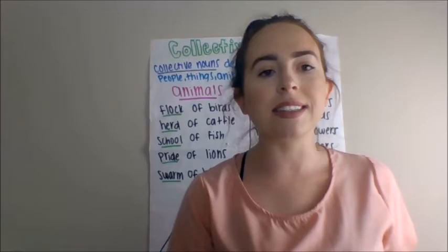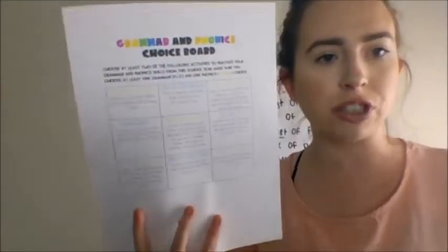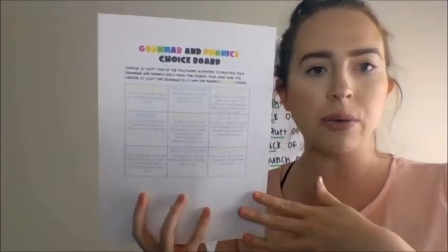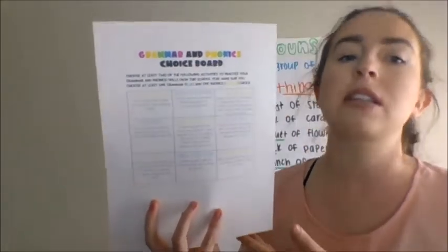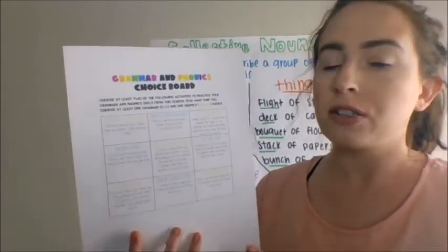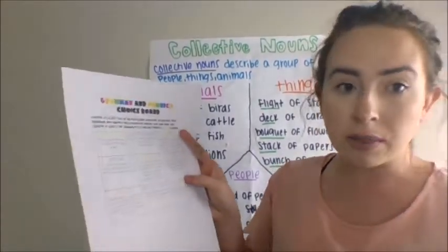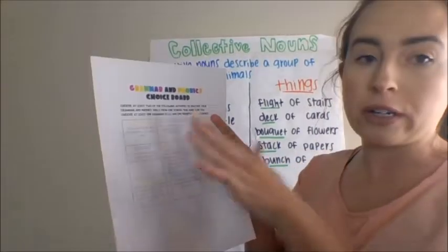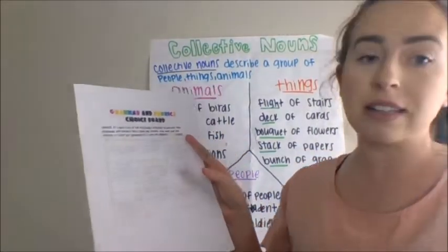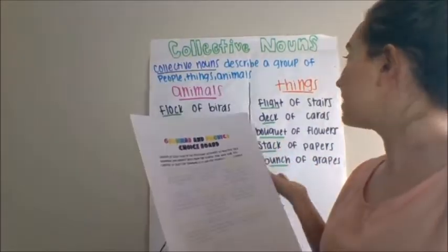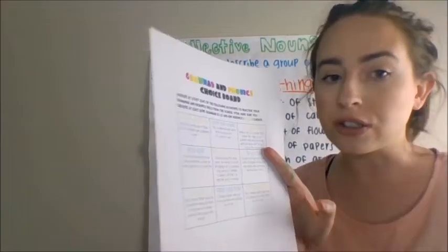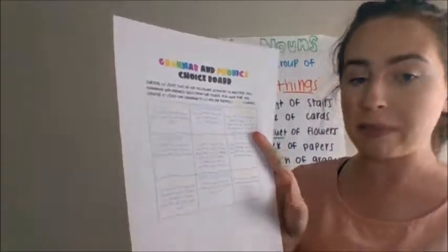Your grammar and phonics assignment for this week is a choice board. You're going to pick one blue and one yellow activity to do, and take a picture or a video and post it to the padlet. Some grammar activities in blue include a collective noun drawing — you'd pick a collective noun, such as a bouquet of flowers, draw a picture of it, and post it on the padlet.